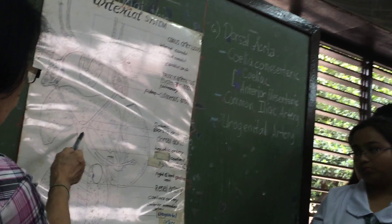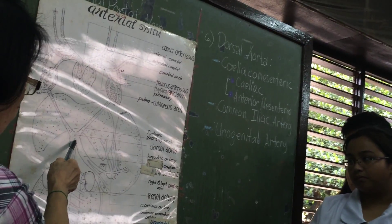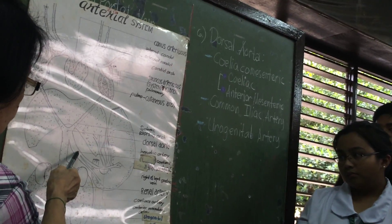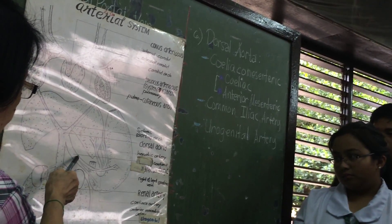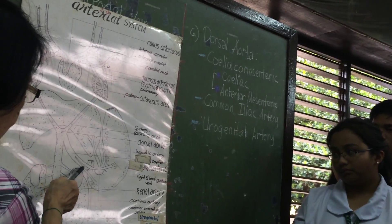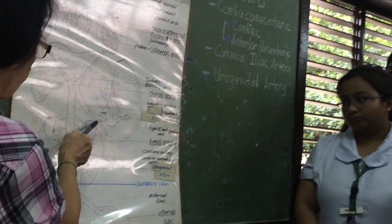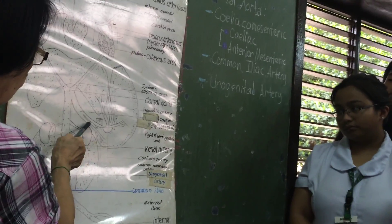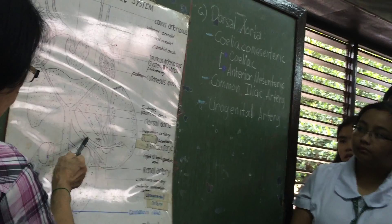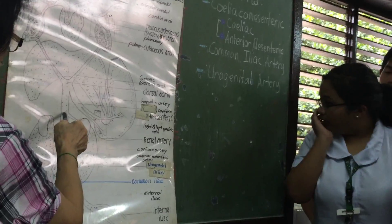So from this portion — dorsal aorta — then you have the other branch, which is the celiacal mesenteric, and then you have the celiac artery, then branching into gastric, mesenteric, and so forth.